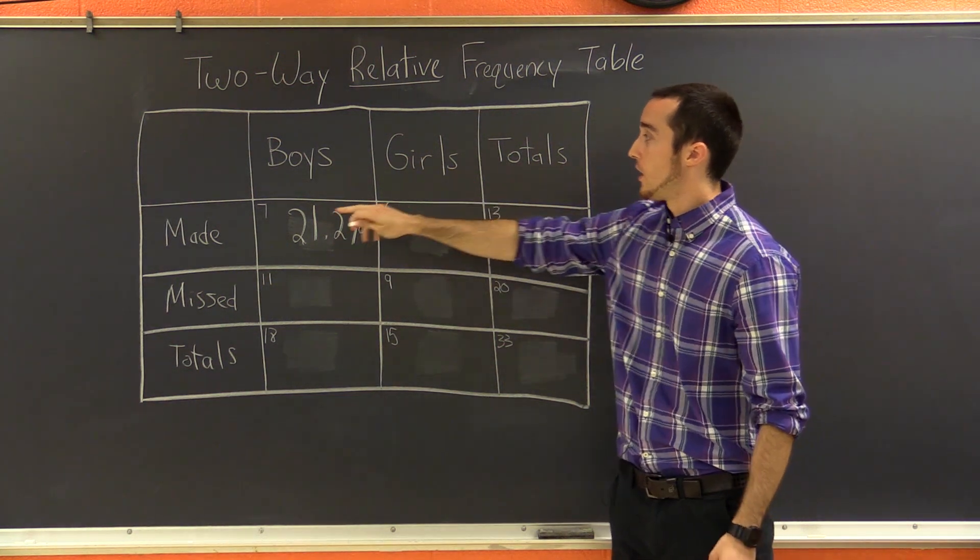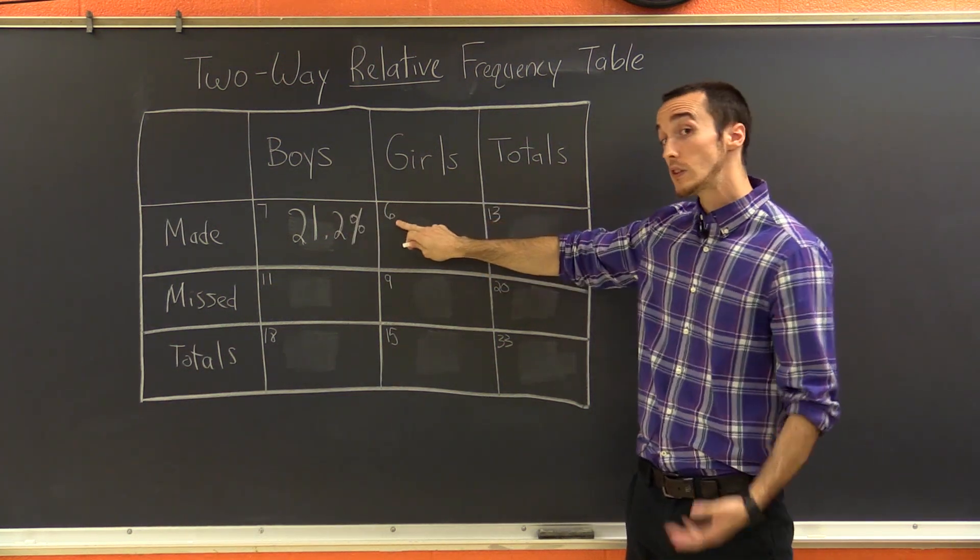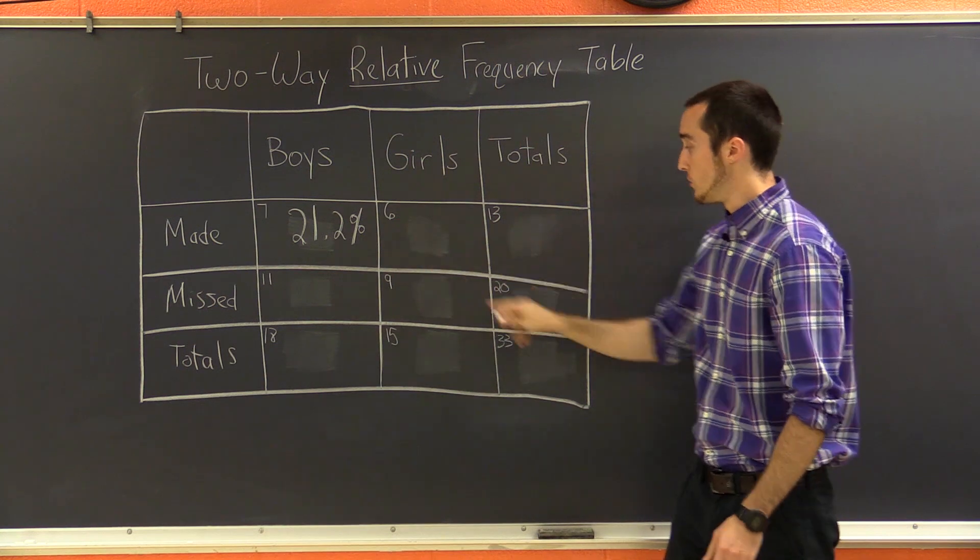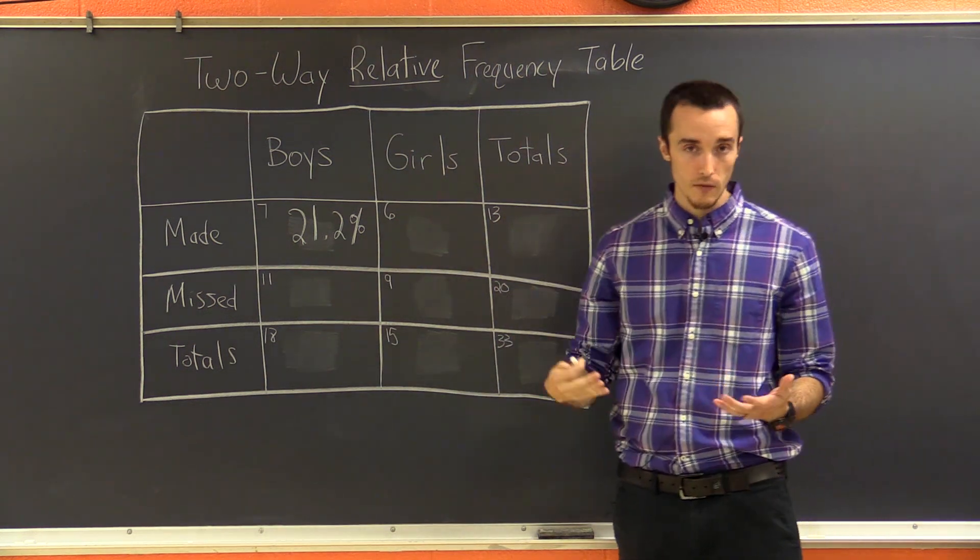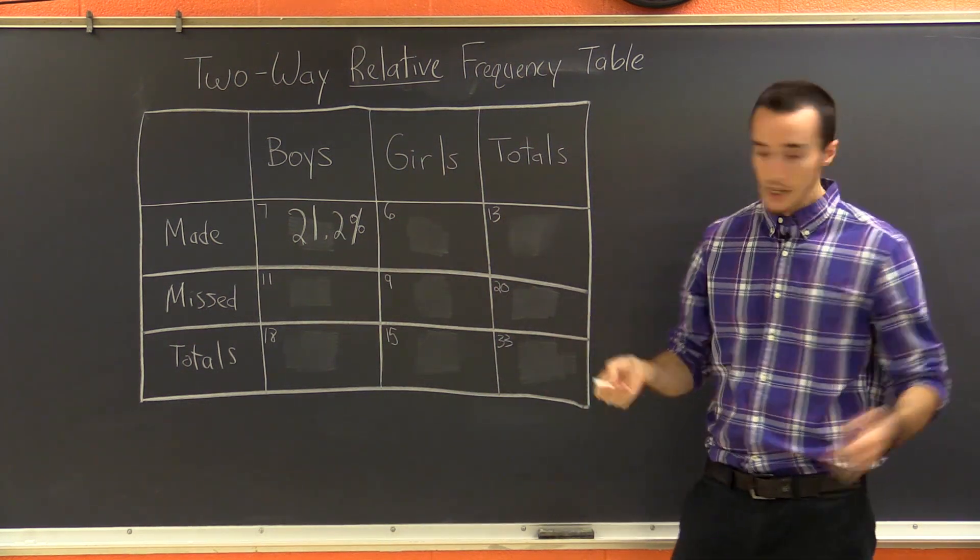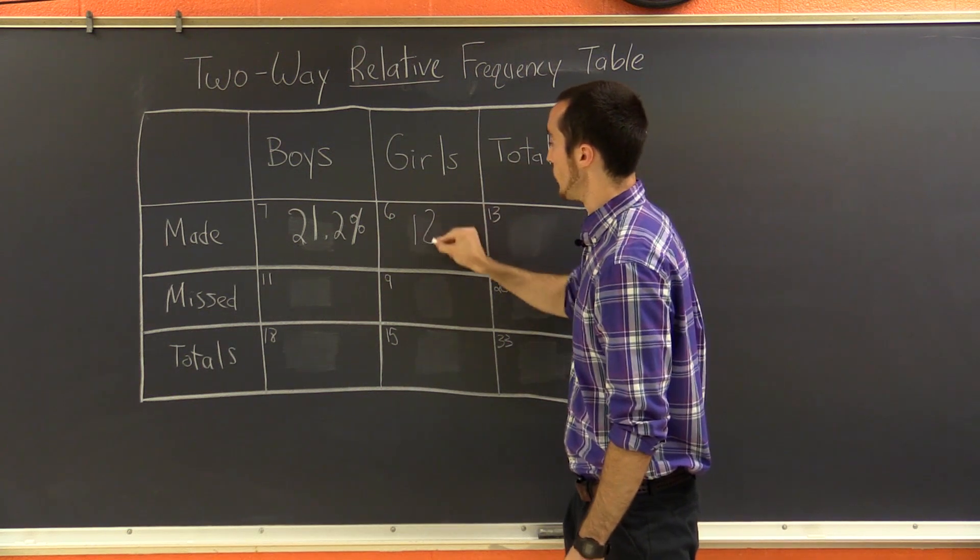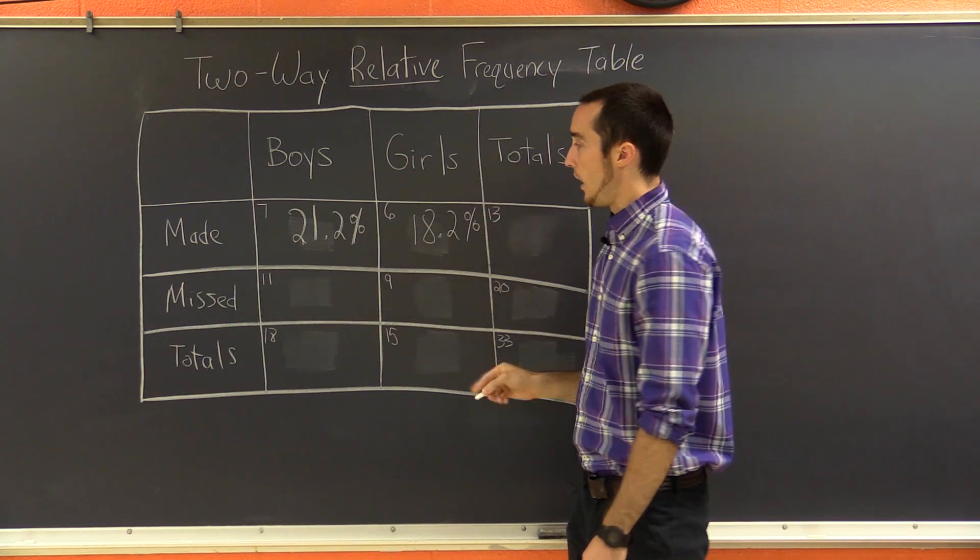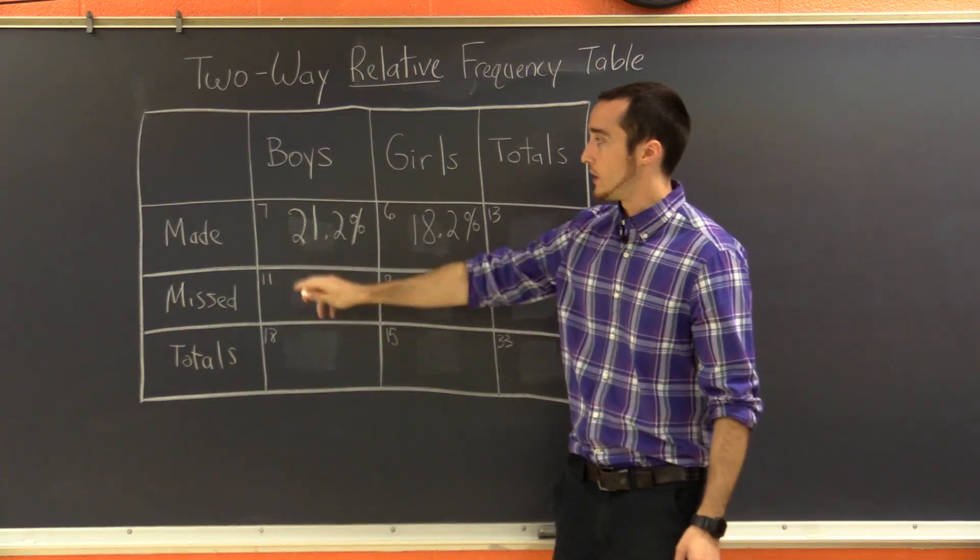So like for instance, the girls who made a basket, there were six girls who made a basket. So six out of 33, or six divided by 33 times 100 is 18.2%. And then I'll kind of fast forward through the rest of these.